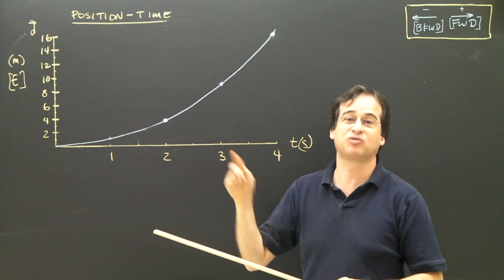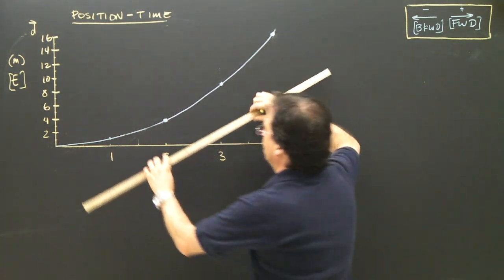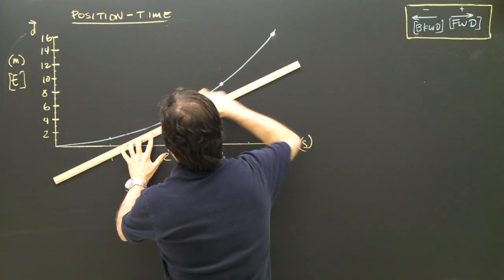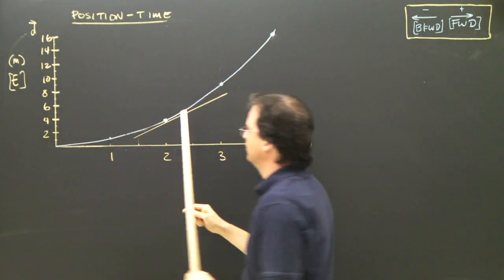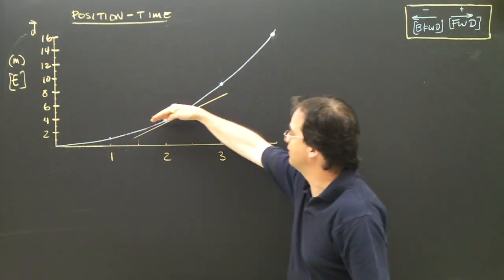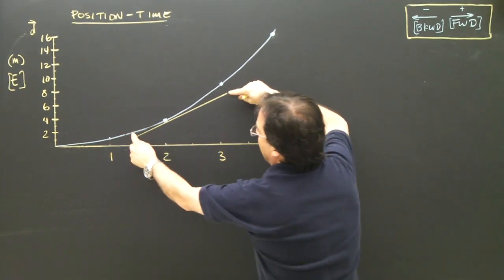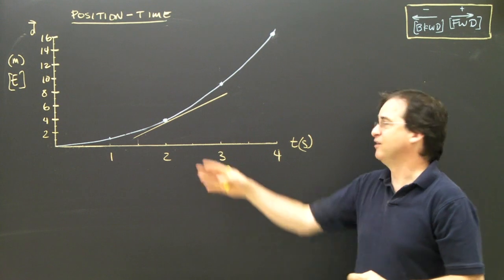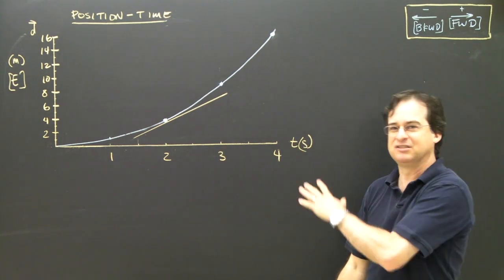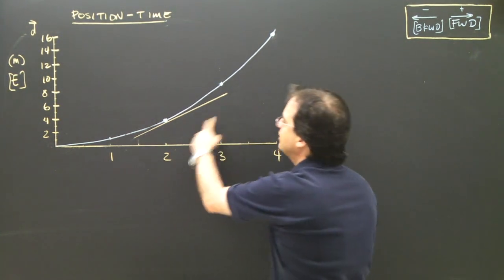But since it's a curve, I need a straight line to work with. So I'm going to draw what's called a tangent. I draw a tangent which approximates the curve at that point. If this was graph paper and there were lines on it, this would be much easier. But this is just a sample.